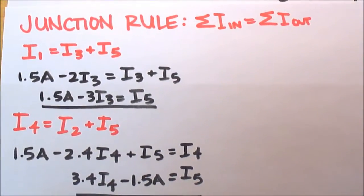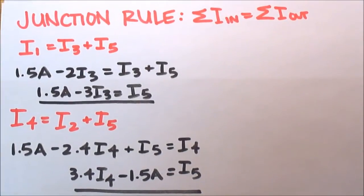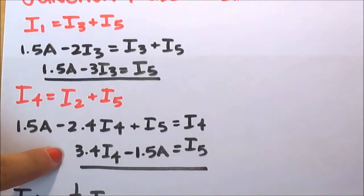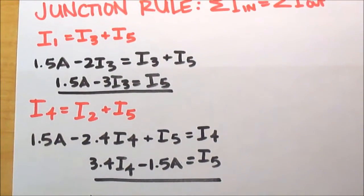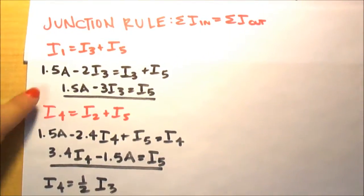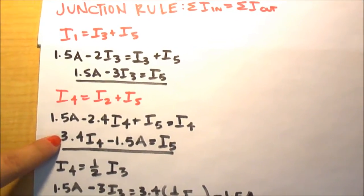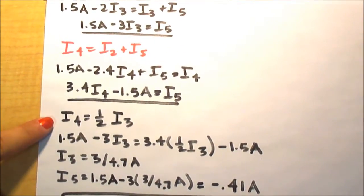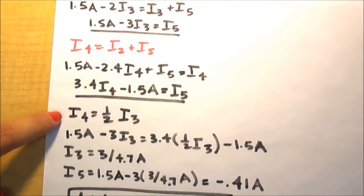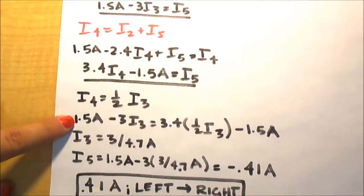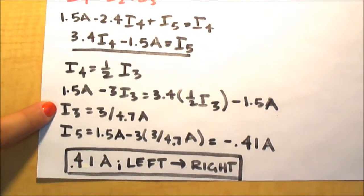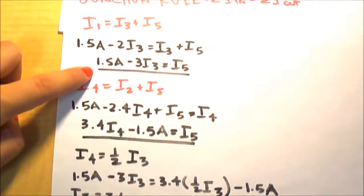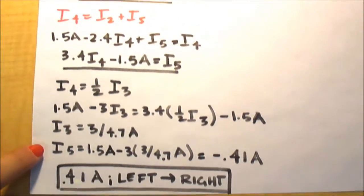Combining the equations that we got using the junction rule and the loop rule, we can come down to these two equations here. Now we can use these two equations and set them equal to each other, and we can use what we found calculating loop 3 to set the entire equation in terms of I3. Once we do that, we can solve for I3, and then plug in I3 back to the equation up here to get our final I5.